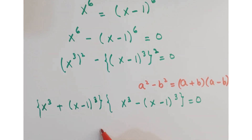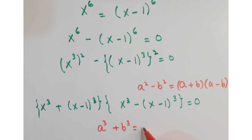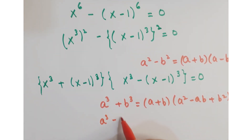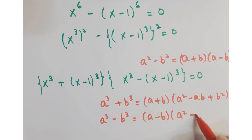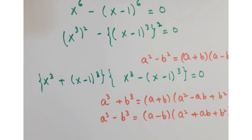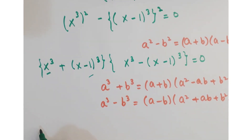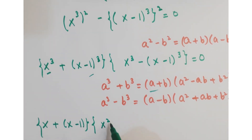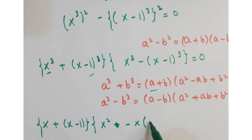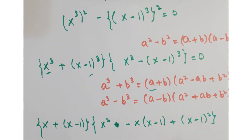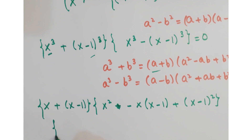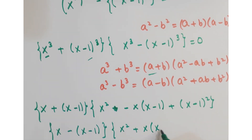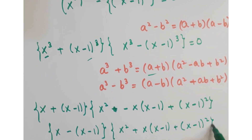Here we can apply two identities: a cube plus b cube equals a plus b into a squared minus ab plus b squared, and a cube minus b cube equals a minus b into a squared plus ab plus b squared. Considering x cube as a and x minus 1 whole cube as b, you expand it as x plus x minus 1 into x squared minus x times x minus 1 plus x minus 1 whole squared, and the second factor as x squared plus x times x minus 1 plus x minus 1 whole squared, equals 0.